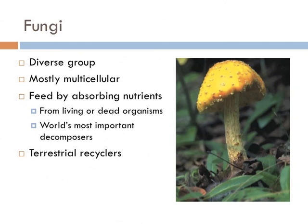Fungi are actually a very diverse group of multicellular organisms. We commonly know them as mushrooms, but there are several other different types of fungi that exist. And just like animals, they are chemo-organo-heterotrophs. But where animals ingest their food, fungi feed by absorbing their nutrients straight from the source. They can absorb nutrients from living things, but their most important ecosystem service is when they consume dead organisms.